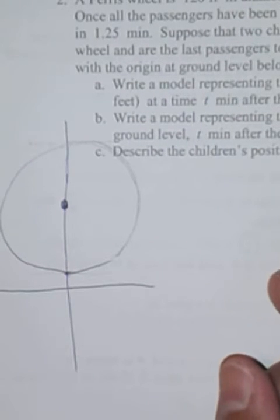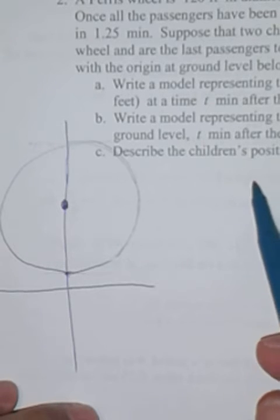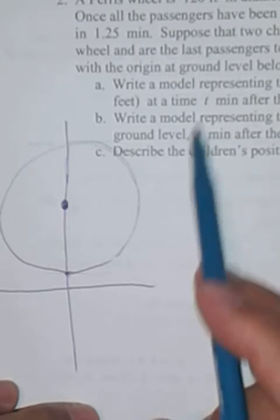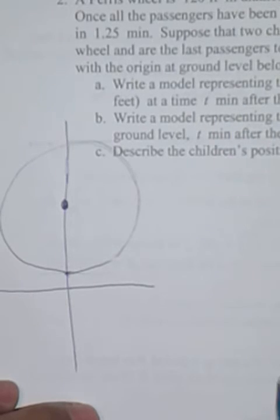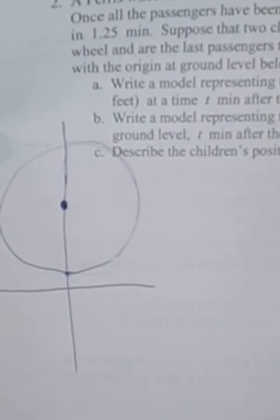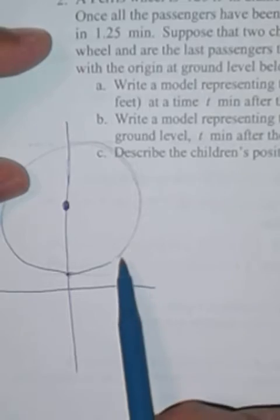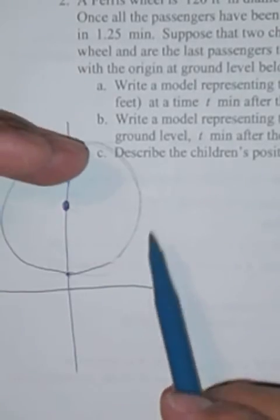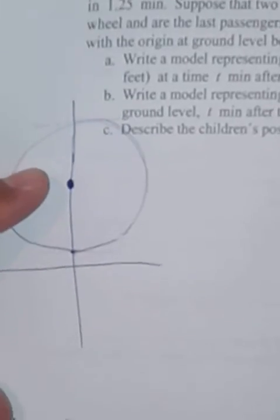And then describe the children's position two minutes into the ride. That means find F of two for each one, for each one of the functions that we find. So we'll describe the vertical position and the horizontal position.